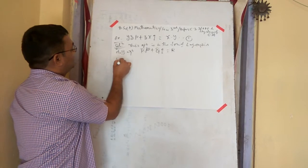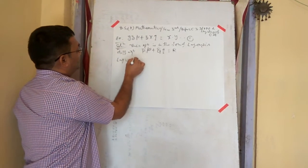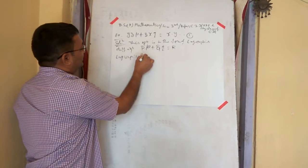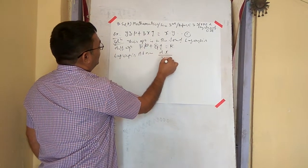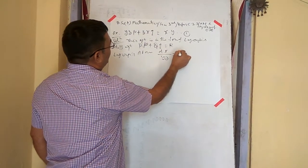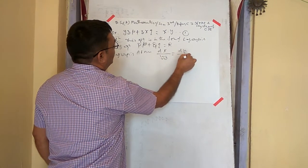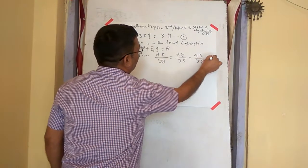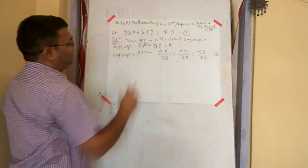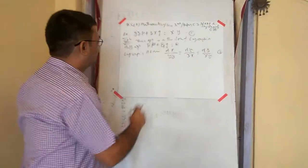So here, Lagrange's auxiliary equations are DX over YZ is equal to DY over ZX. This is equal to DZ over XY. We get three fractions. Now the first two fractions.